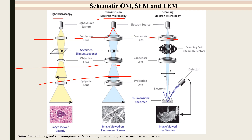The next component is the objective lens system, which is placed near the object. This is the first magnification lens system. Then the projector lens provides further, very large magnification. In the scanning electron microscope, there is a scanning coil placed after the condenser lens, which scans the beam across the sample surface.